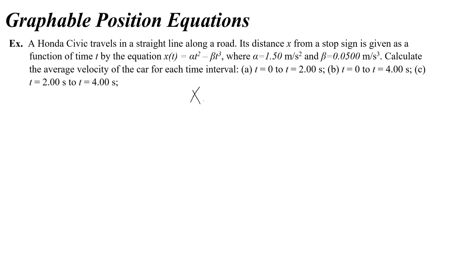The first thing that I would do is I would write this position equation with alpha and beta written in, so 1.5 meters per second squared times t squared minus beta is 0.05 meters per second cubed times t cubed.